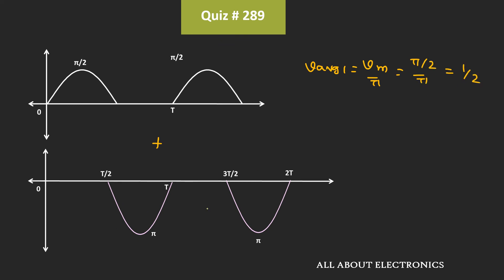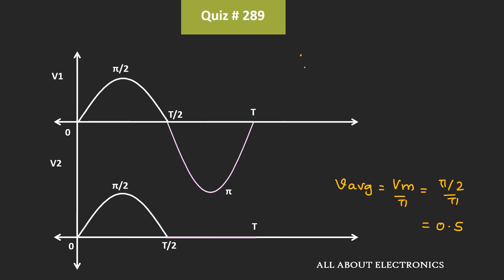For the second waveform, the average value will be equal to –Vm divided by π, that is –Vm divided by π, which equals –1. That means the overall average value of waveform V1 is equal to 1/2 plus (–1), which is equal to –1/2, or –0.5.